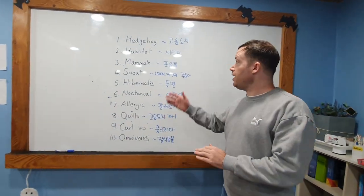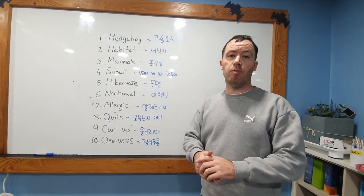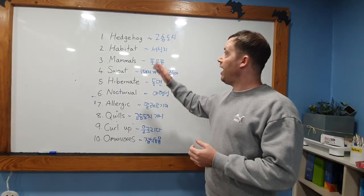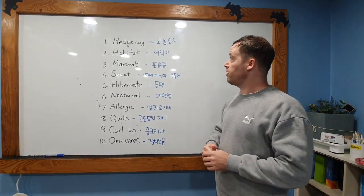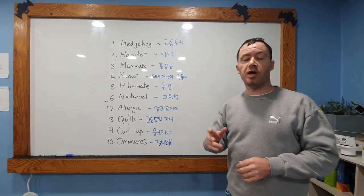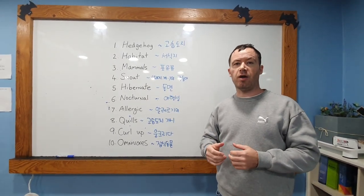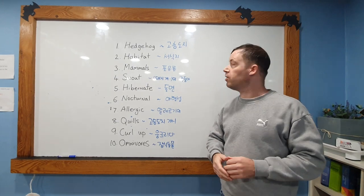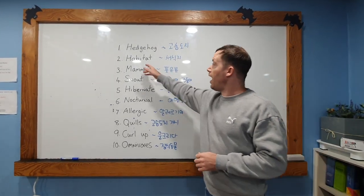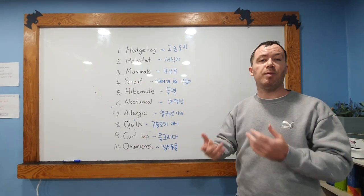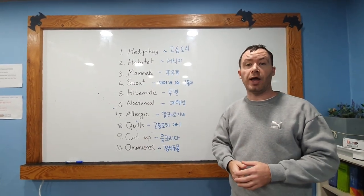First of all, the name hedgehog actually comes from where they live. Hedge is like a big bush - that's where they like to live. And hog is another word for a pig. They make grunting sounds apparently. So it's called a hedgehog. And the habitat is a hedge, a habitat where animals normally like to live.